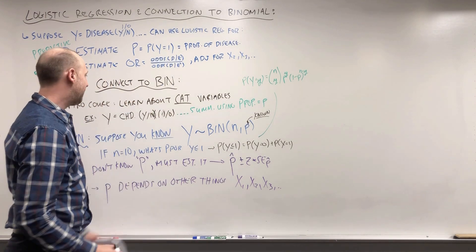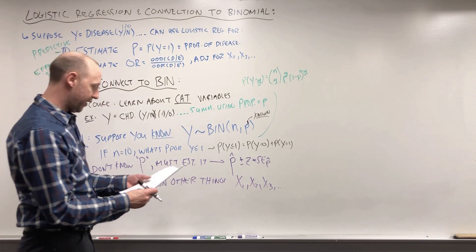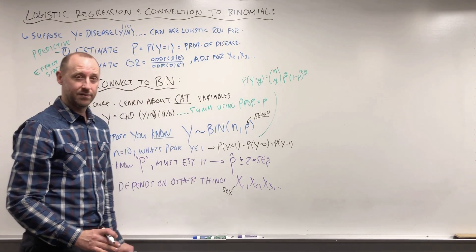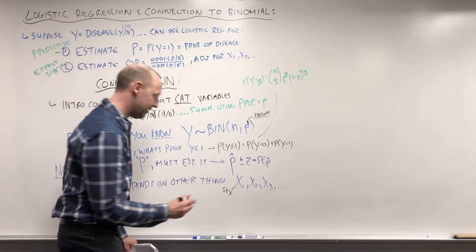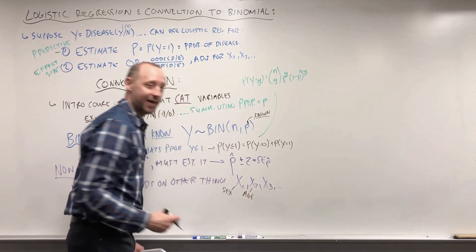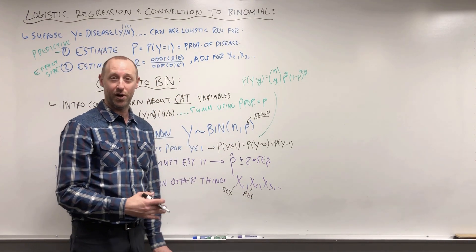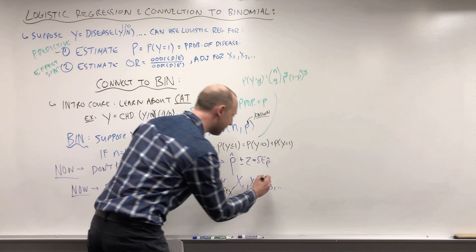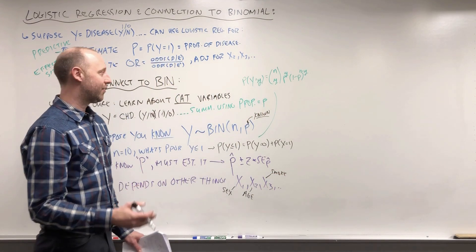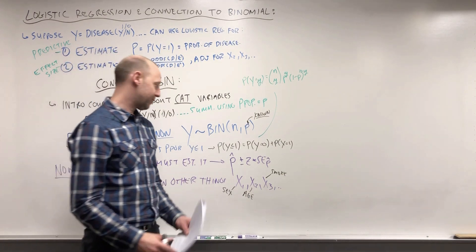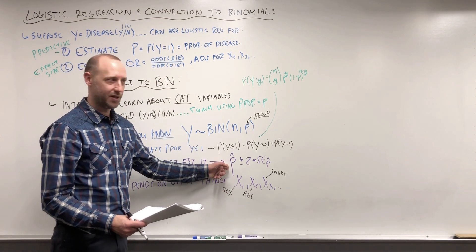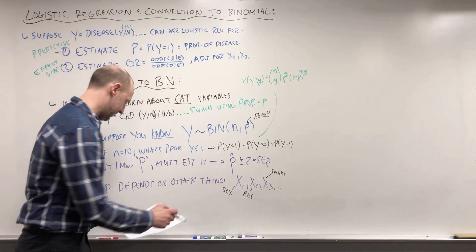What are some examples? If you're looking at what's the probability of getting coronary heart disease, it likely depends on biological sex — I think males are more likely than females. Age: as age increases, your risk of coronary heart disease goes up. And smoking: someone who smokes is at higher risk of getting coronary heart disease. The point is, we don't want to just say what's the probability of coronary heart disease — that depends on other things.